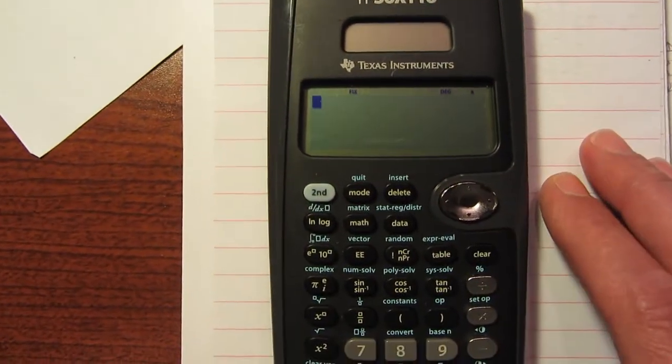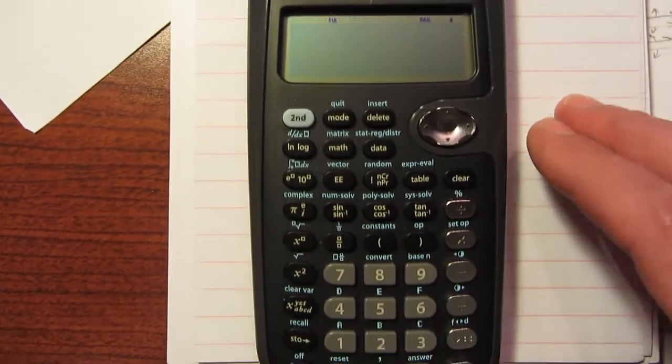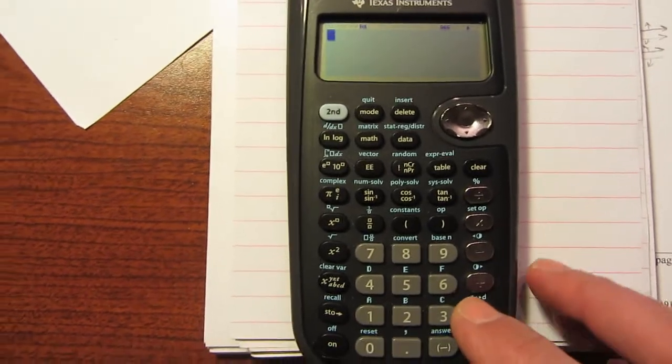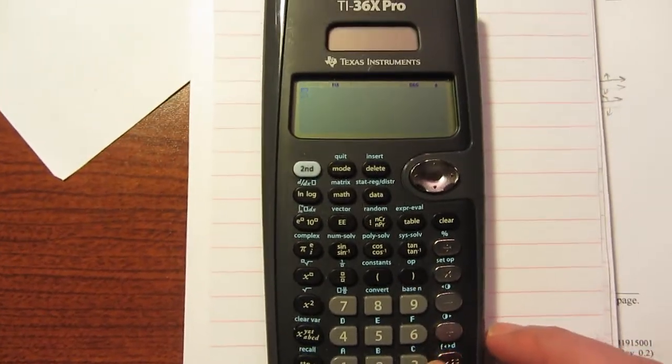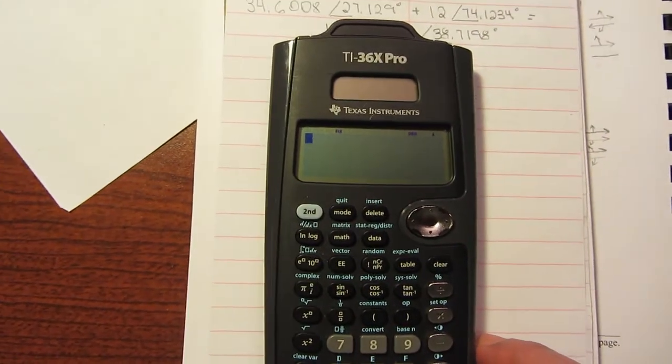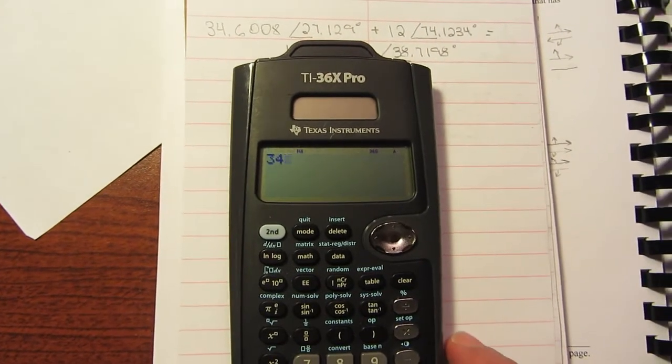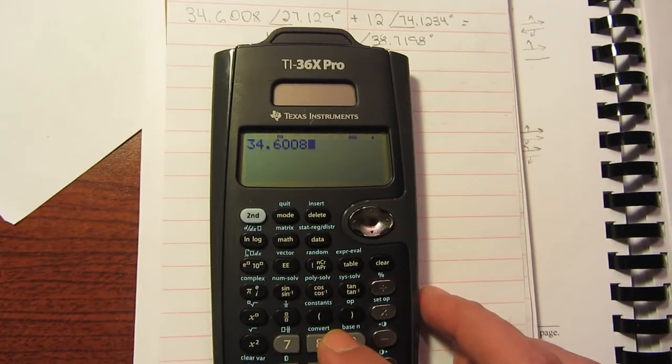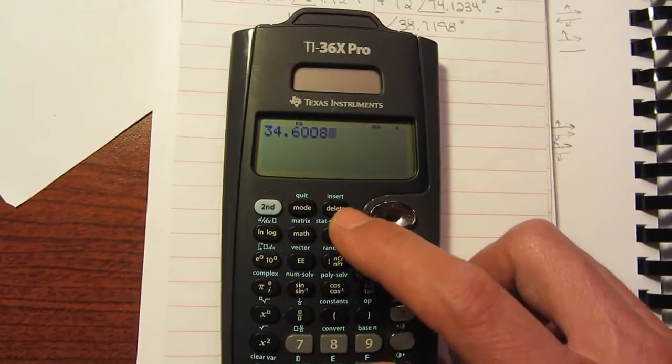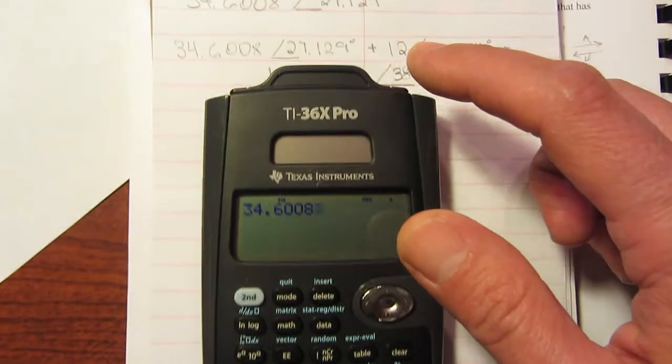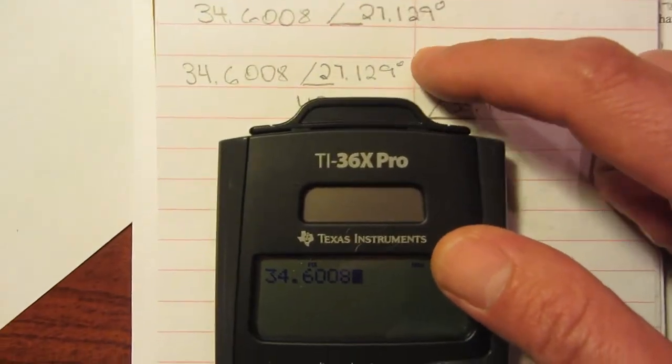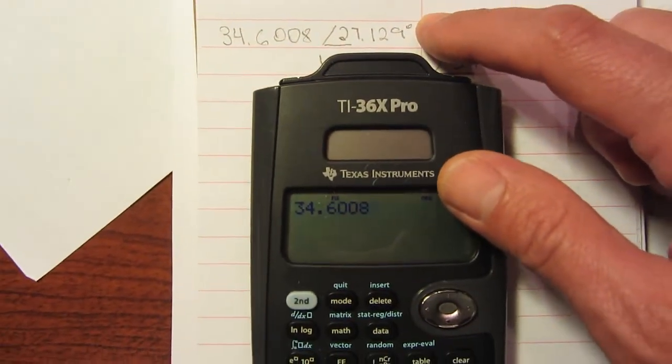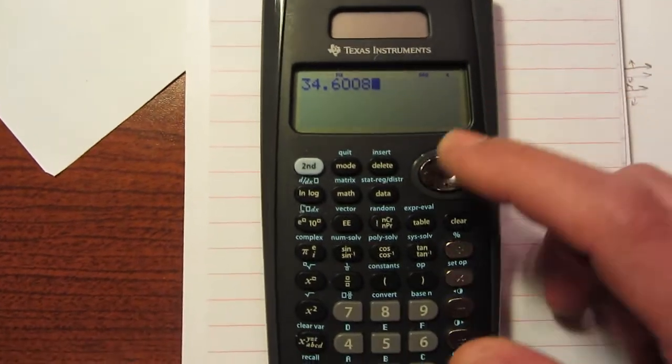Anyway, let's see. I'm going to take those values of 34.6008. And then, I want to add that angle there. That 27 degrees. Well, we display that. We hit the second function.